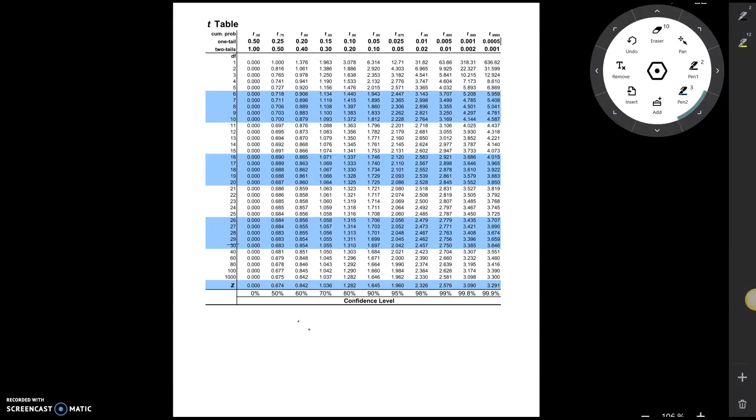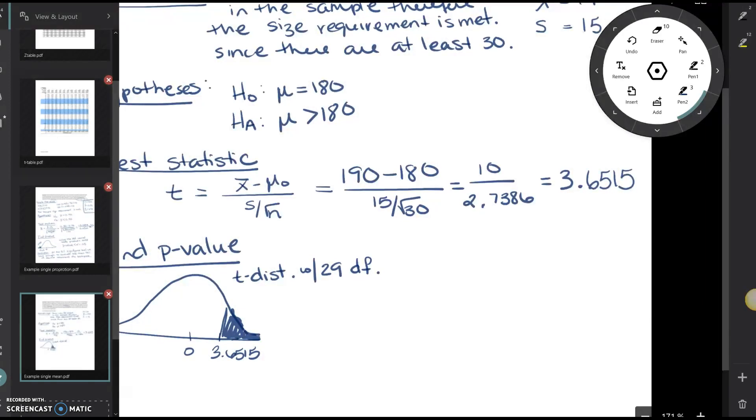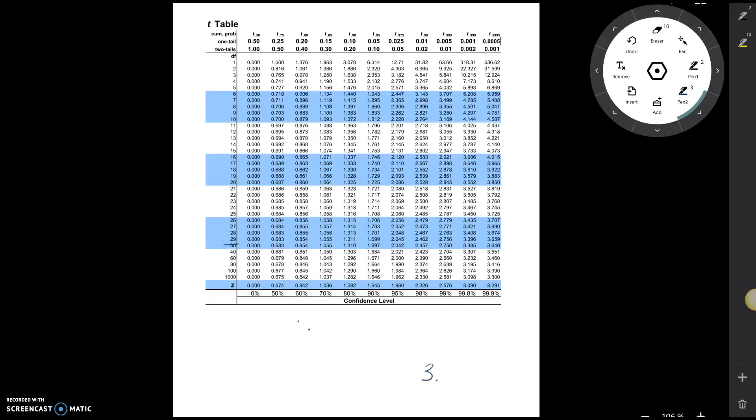Alright, so we need 29 degrees of freedom. Going back, the test statistic we're interested in is 3.6515. Now what I'm going to do is I'm going to go along this line here, and I'm going to find the value that is closest to 3.6515. Notice that 3.6515 falls in between these two numbers right here on the degrees of freedom equal to 29 line.